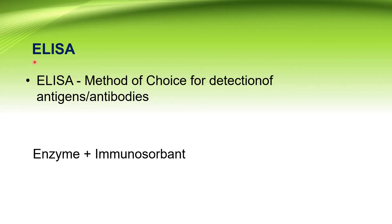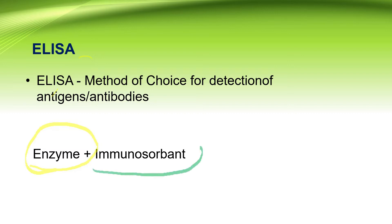ELISA stands for Enzyme-Linked Immunosorbent Assay and it is a method of choice for the detection of antigen or antibodies. It is named so because an enzyme is used to label one of the components of the immunoassay, and the second name, immunosorbent, refers to an absorbing material which specifically absorbs the antigen or antibody present in the patient serum.